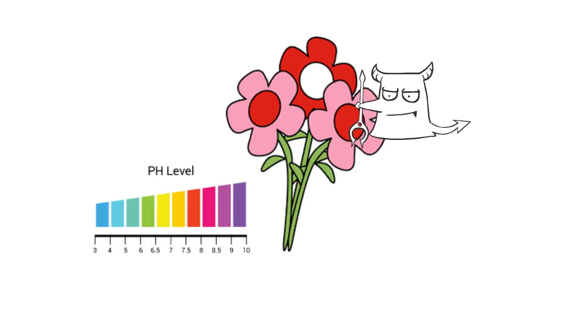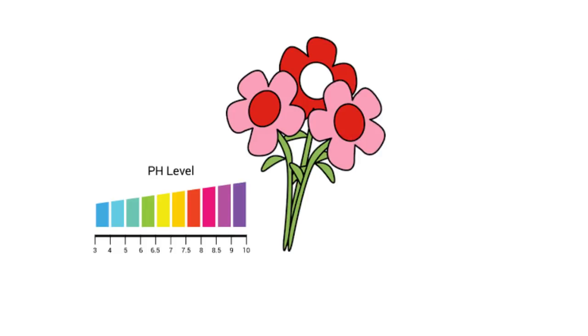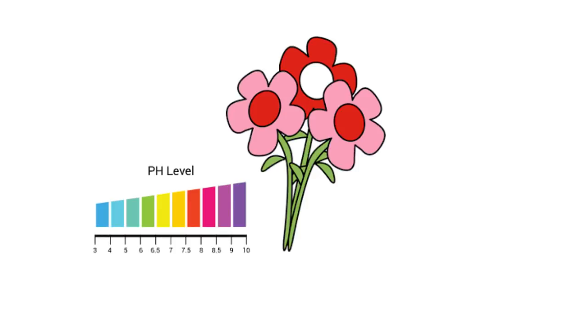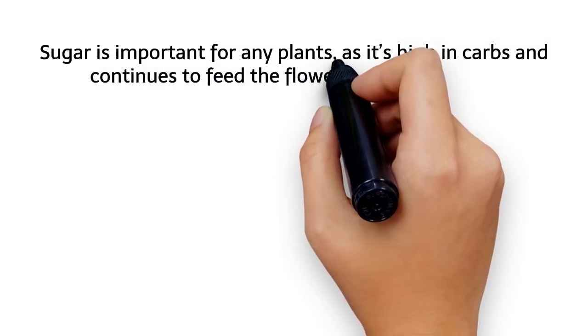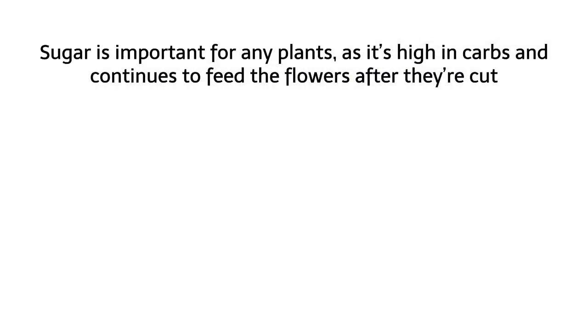Microbes, which are fed by decaying plant material and any added sugars, cut the life expectancy of flowers. Sugar is important for any plants, as it's high in carbs and continues to feed the flowers after they're cut, helping unopened buds to open while extending the life and vitality of the open flowers.